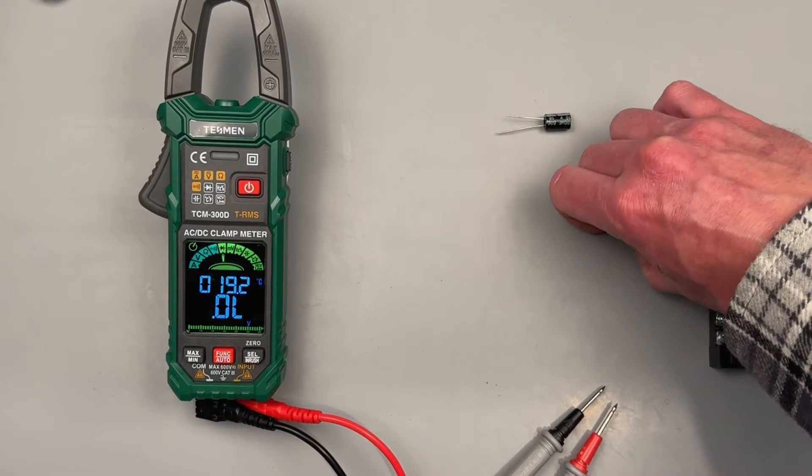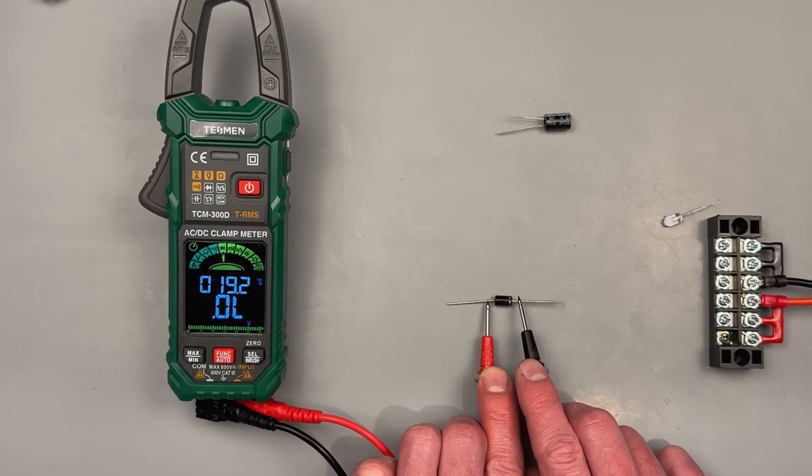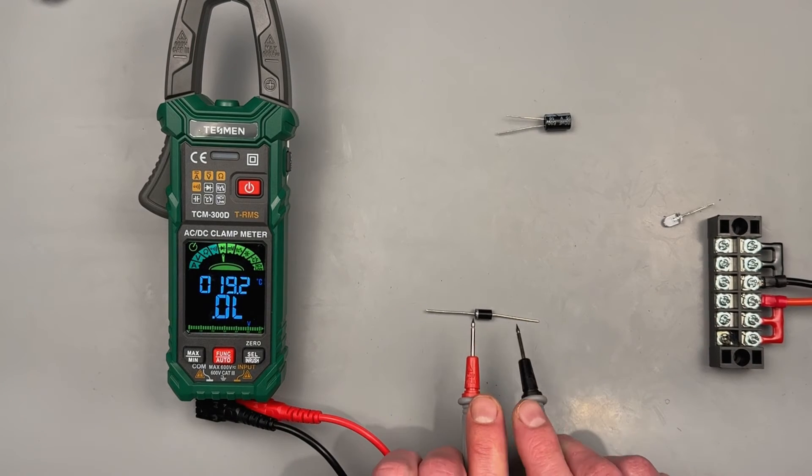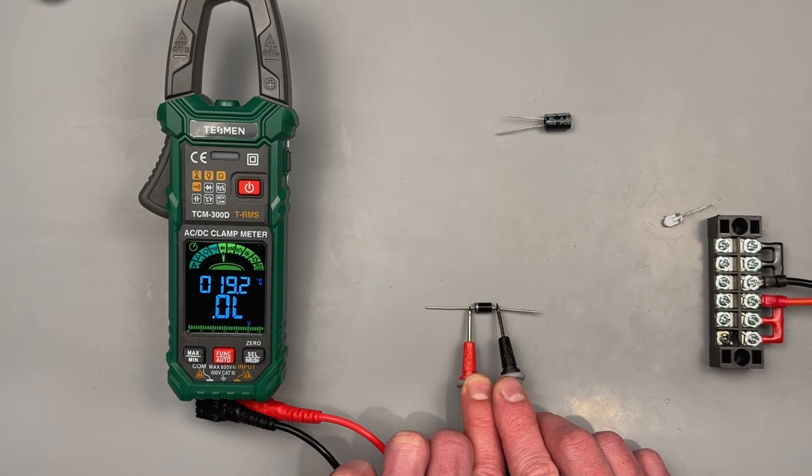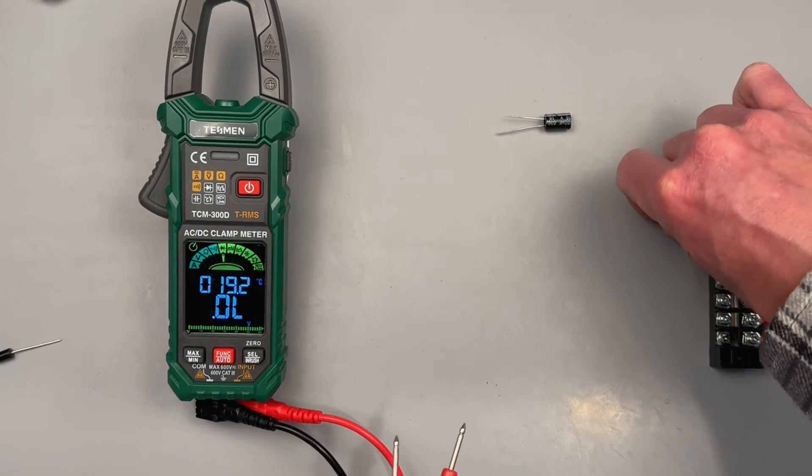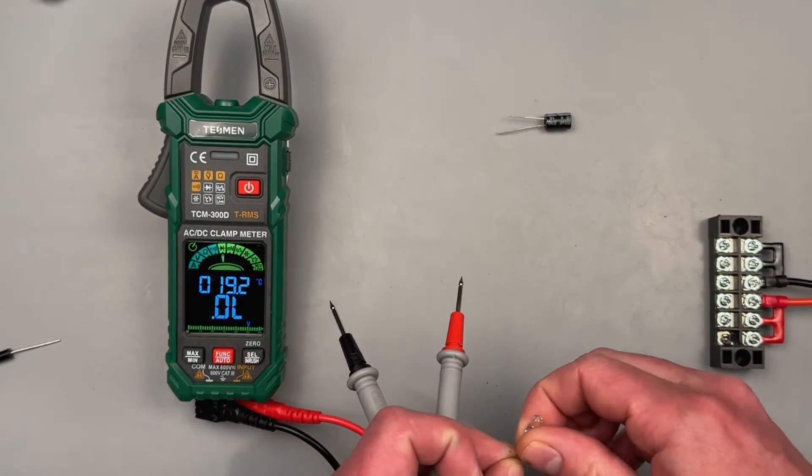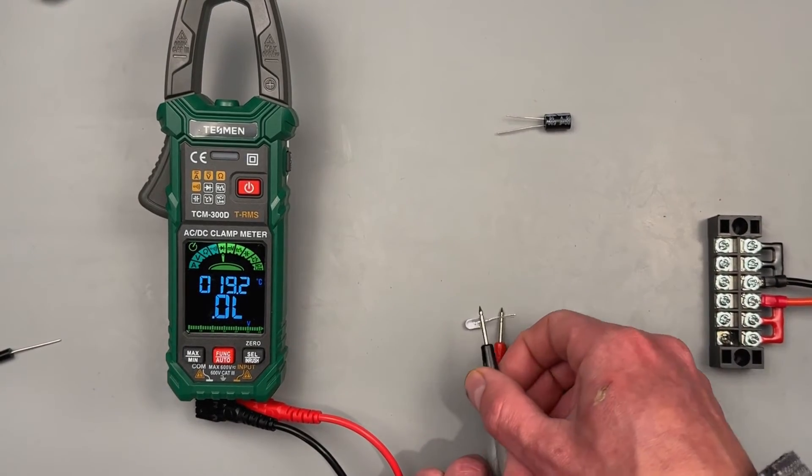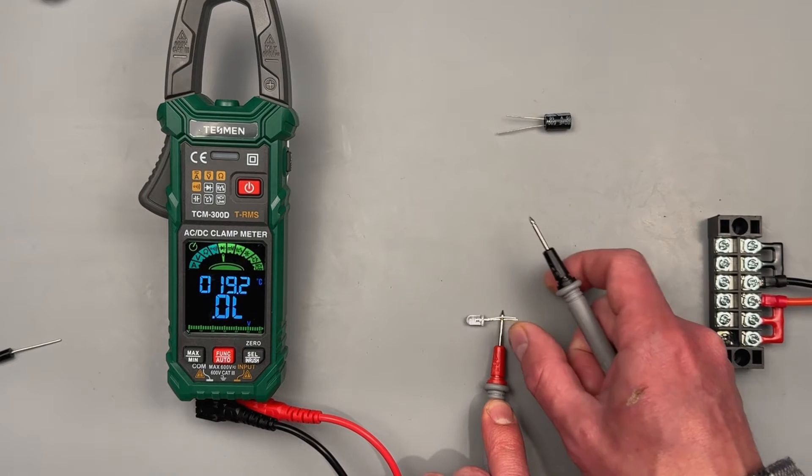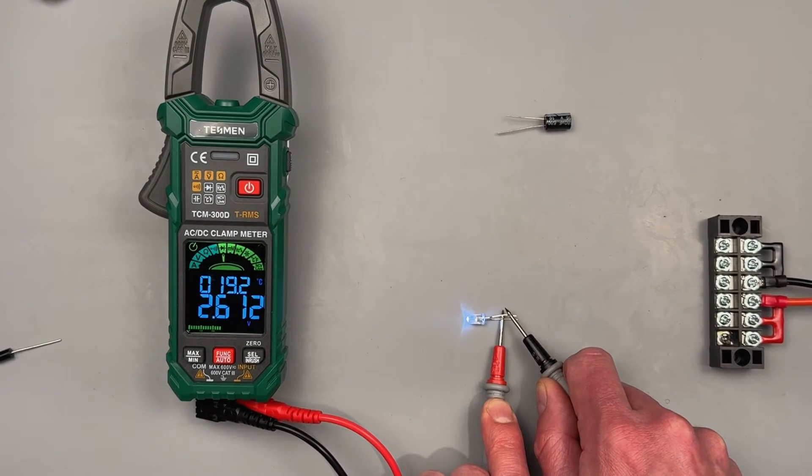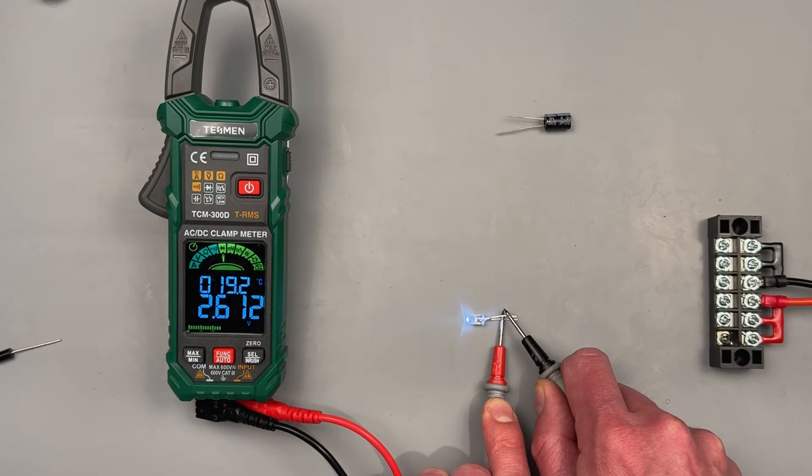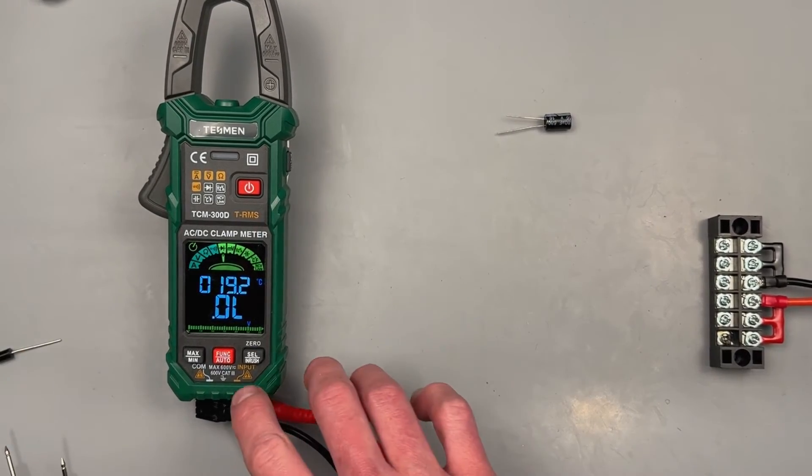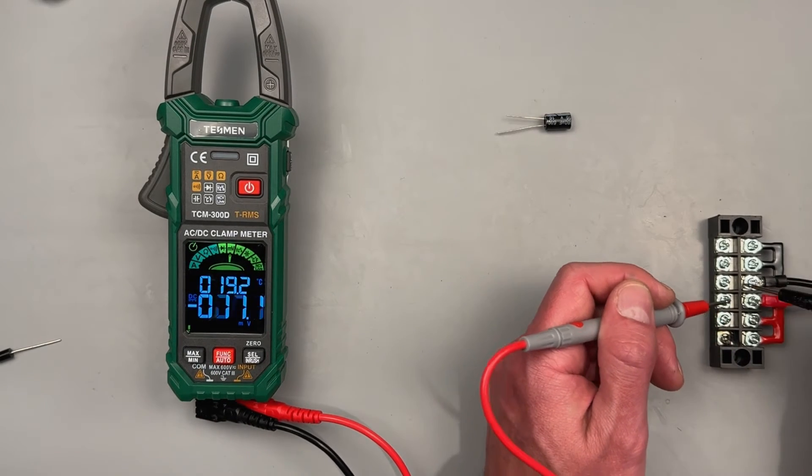Now we can go to diodes, and we should see the voltage drop in one direction, and then we should see an open measurement in the other direction. We always test diodes in both directions, and that'll tell us if the diode is good. Another little test I always like to do on these meters is sometimes the meter will produce enough voltage in this test to show you the forward voltage of an LED. It's not always the case, but I always like to check. And if it can turn it on, that means it takes 2.6 volts to turn on this LED, which is pretty cool.